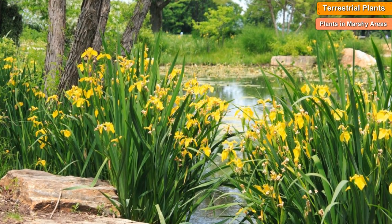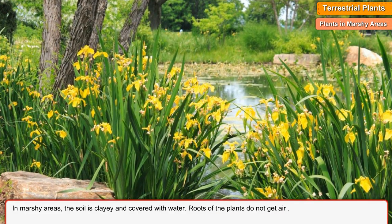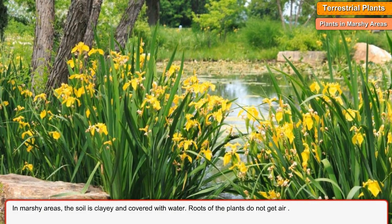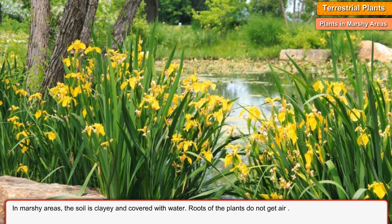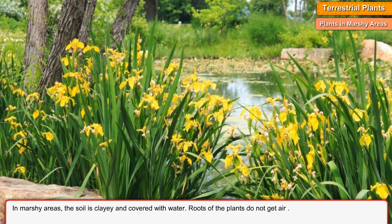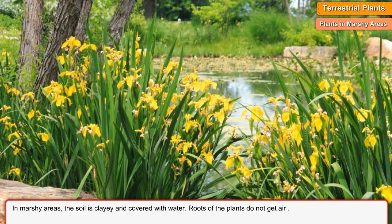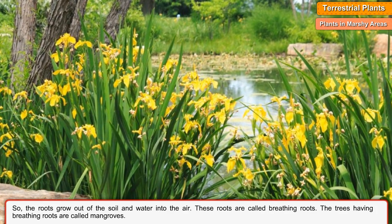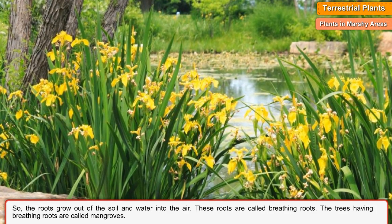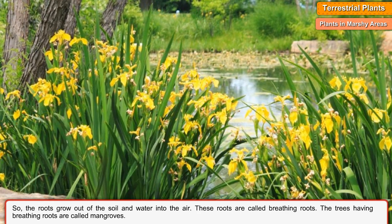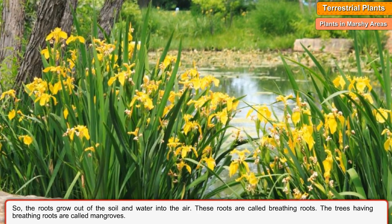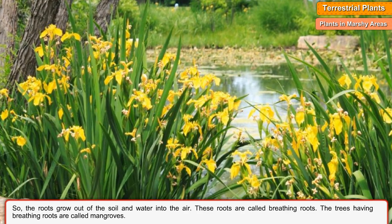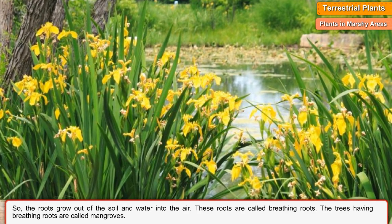Plants in Marshy Areas. In marshy areas, the soil is clay and covered with water. Roots of the plants do not get air. So, the roots grow out of the soil and water into the air. These roots are called breathing roots. The trees having breathing roots are called mangroves.